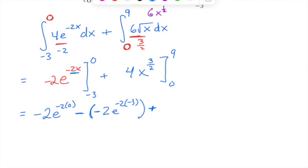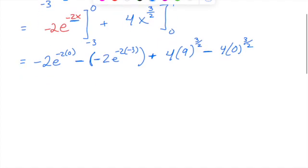Now we're going to add what we get from this second antiderivative. Plugging in 9 first, we get 4·9^(3/2) minus plugging in 0. That last part is going to become 0, so now it's just a big simplification.